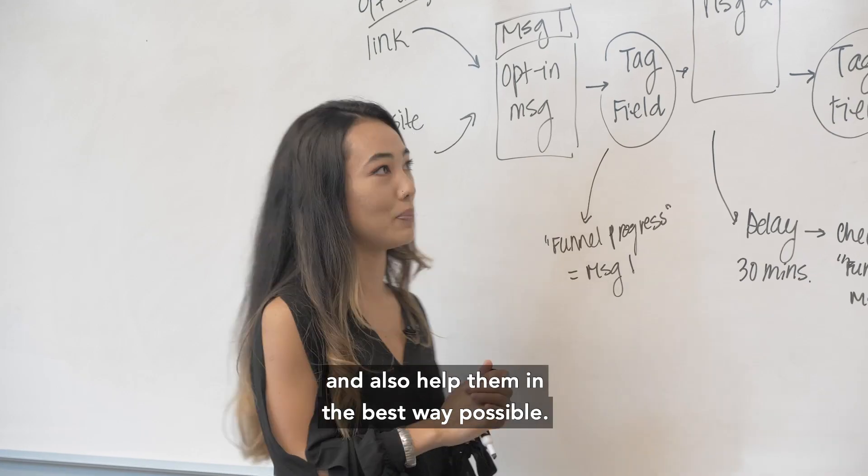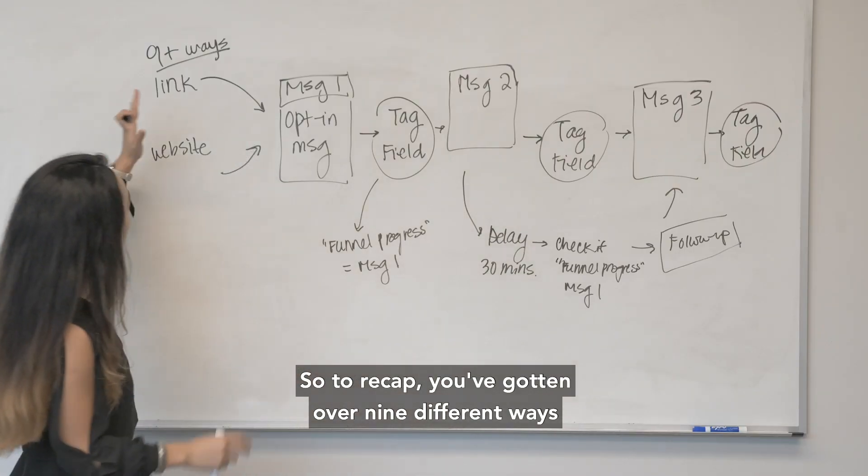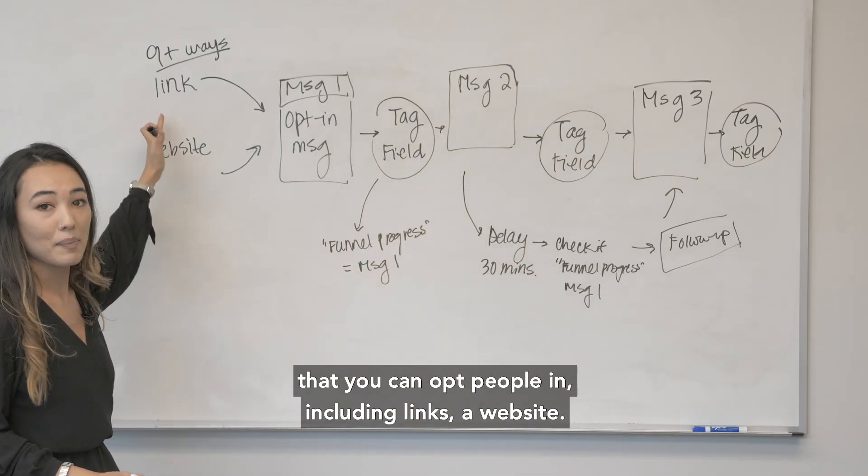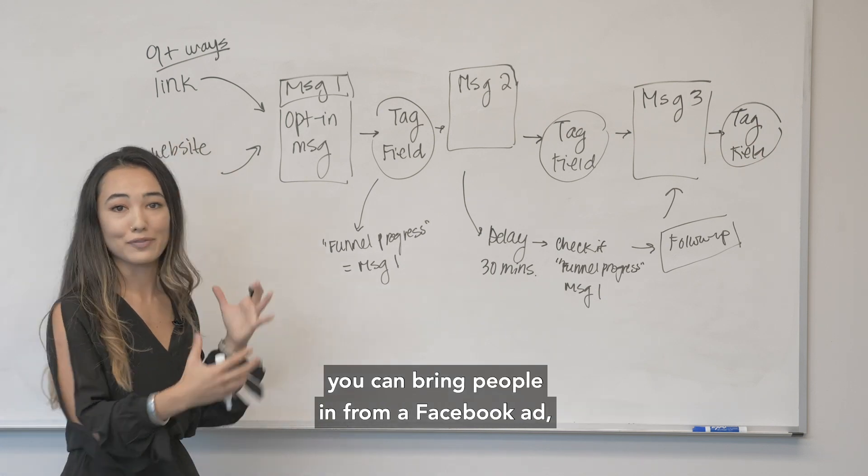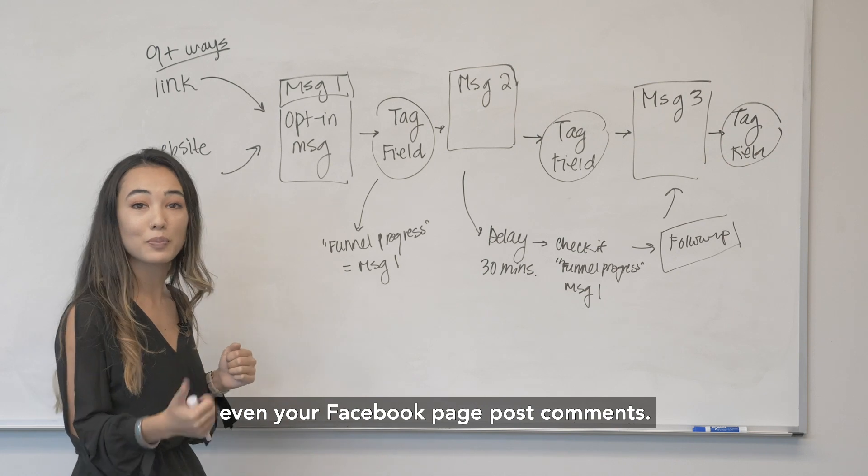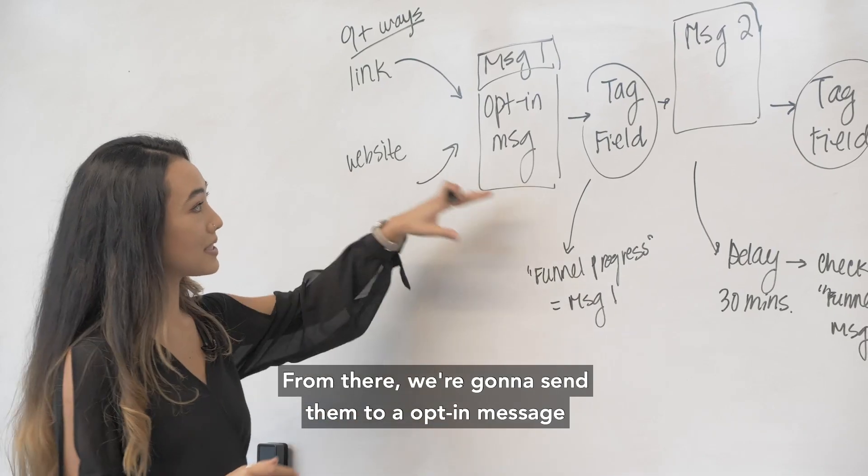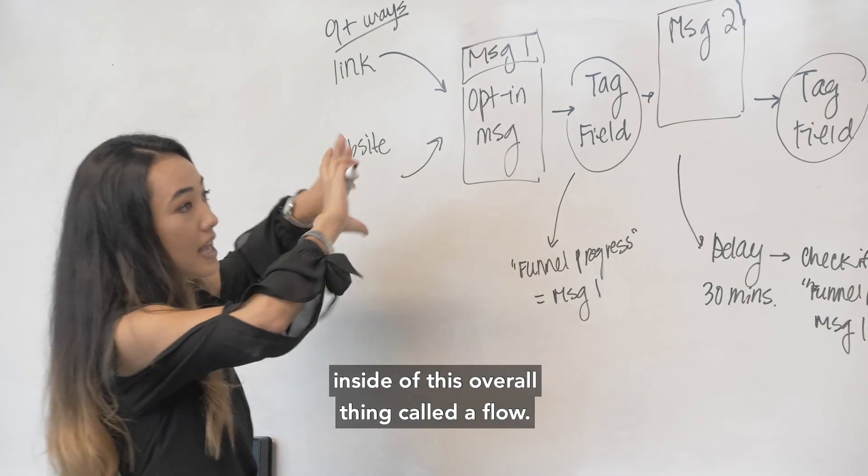So to recap, you've got over nine different ways that you can opt people in including links, a website, someone could message your Facebook page, you can bring people in from a Facebook ad, even your Facebook page post comments.